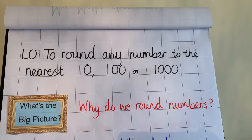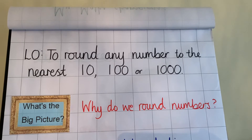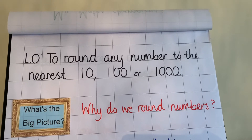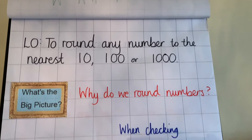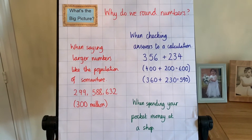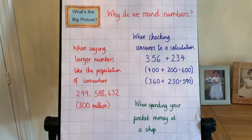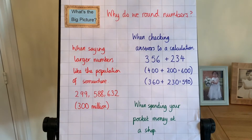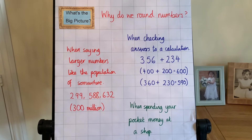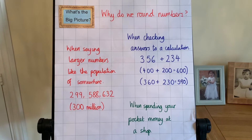So why do we round numbers? What's the big picture? Rounding is a way of simplifying numbers to make them easier to understand and work with. It's useful when an exact number isn't needed. So when saying larger numbers, like a population of somewhere, you don't want to say 299,588,632. You could just say 300 million. We use words like roughly and approximately when we're saying that.